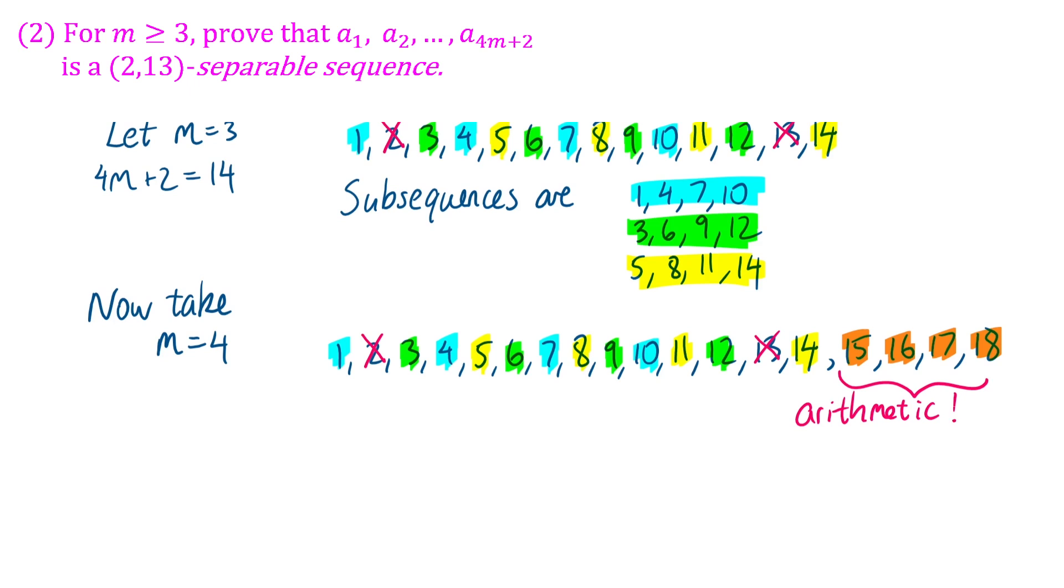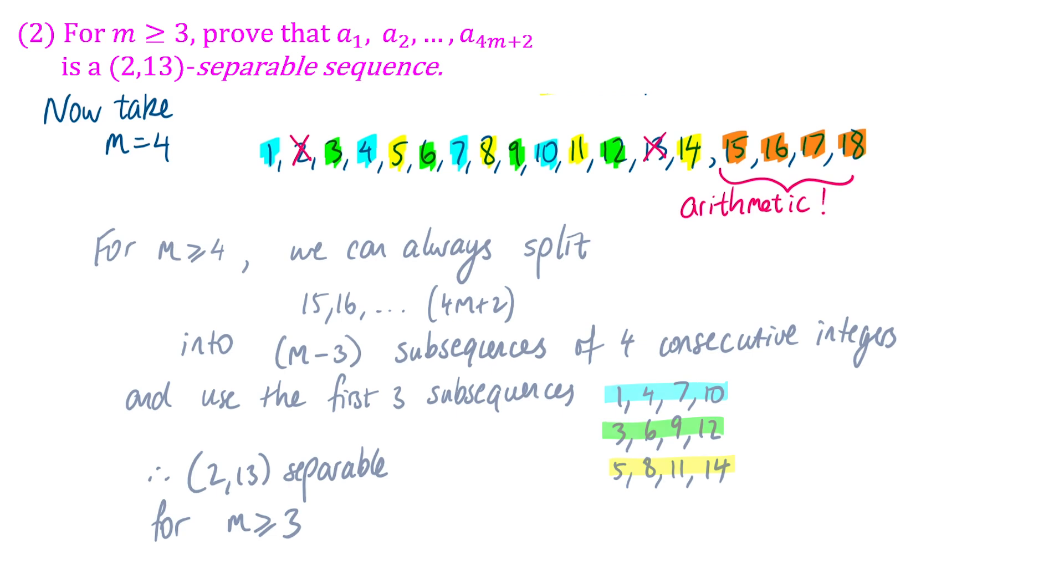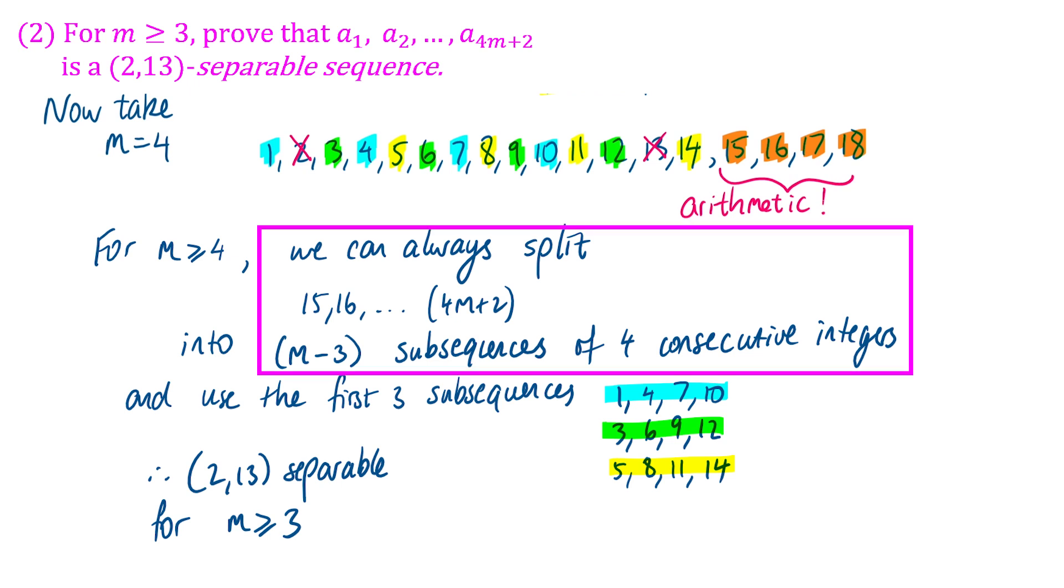And the other three, we already showed the other three arithmetic subsequences. So now we have four arithmetic subsequences. So when m = 4, this sequence is separable. And that same trick is going to work no matter what m is, because we just keep on adding four terms every time. So we can always use the same first three subsequences. And then for the terms 15, 16, all the way up to 4m + 2, no matter how many of them there are, it'll always be a multiple of four. So we can separate these into m - 3 subsequences of four consecutive integers each.